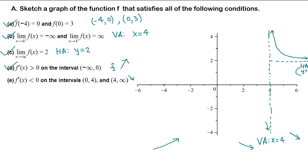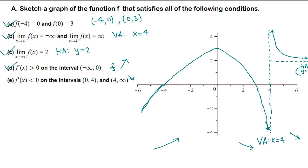The function is increasing and passes through (-4, 0), then goes up to (0, 3), then decreases — and eventually has to come down to the vertical asymptote. We pass through (-4, 0), increase to (0, 3) which is a local maximum, then decrease as it approaches x = 4. This is one of many correct answers.